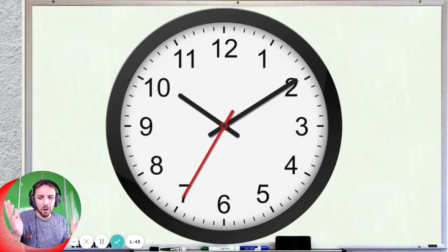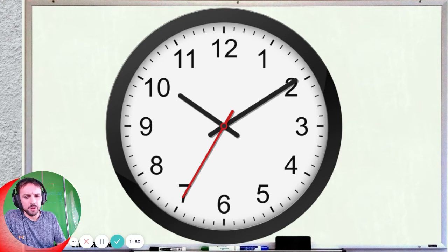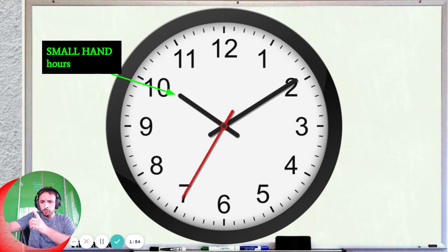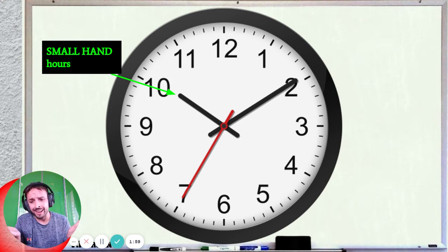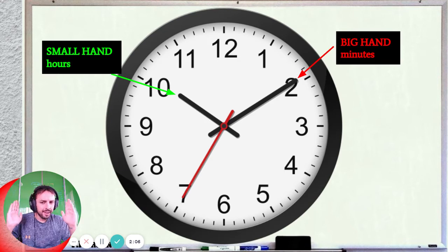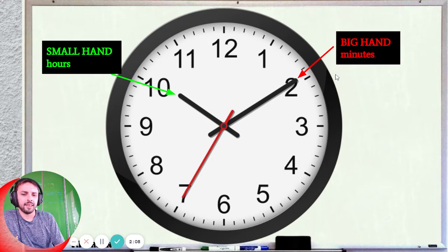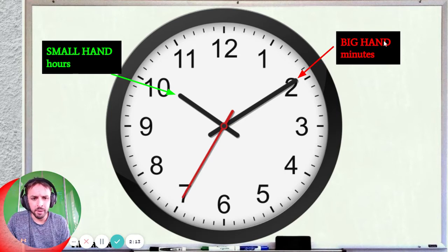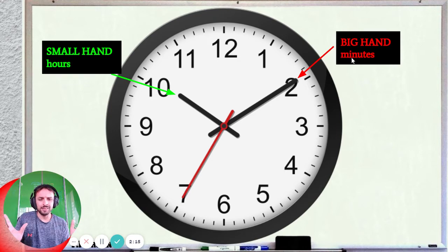Let's move on to the clock. So to tell the time, we need to look at the clock. Now on the clock there are two arms — two hands. You have a small hand and you have a big hand. Now the small one is for the hours, and the big hand is for the minutes.